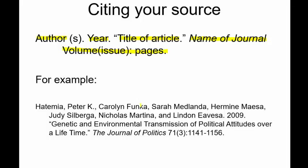All that information is right there on the abstract page. Here's an example from the Journal of Politics: lead author last name first, co-authors, period, year published, period, then the article title 'Genetic and Environmental Transmission of Political Attitudes Over a Lifetime' in quotations, period, then in italics the Journal of Politics, volume 71, issue 3, pages 1141 to 1156. That covers what peer-reviewed journals are, how to find them, and how to cite them. I'll post another video on additional credible sources.